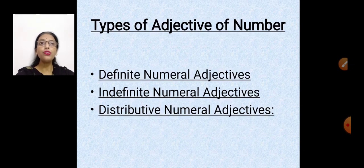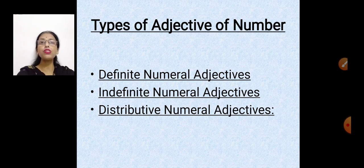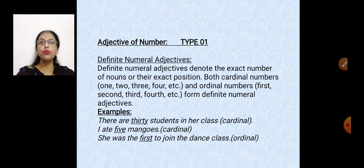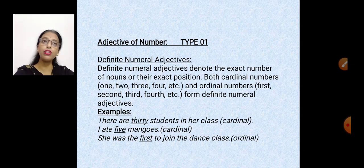Now, adjective of number can be divided into three types: definite, indefinite and distributive. The definite type is about surety — we are definite about it. Definite numeral is further divided into two parts: cardinal and ordinal.